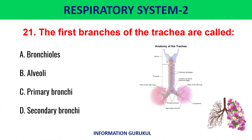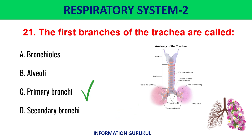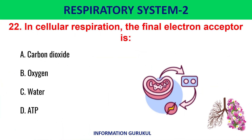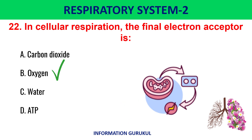The first branches of the trachea are called primary bronchi. In cellular respiration, the final electron acceptor is oxygen.